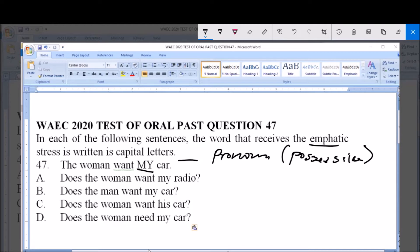Now option A says: does the woman want my radio? No, we are not talking of radio. Does the man want my car? No, we are not talking of man. Option C: does the woman want his car? Option D: does the woman need my car?